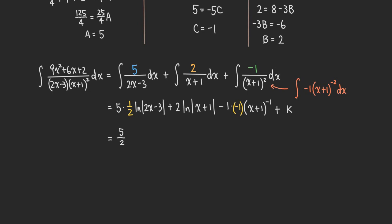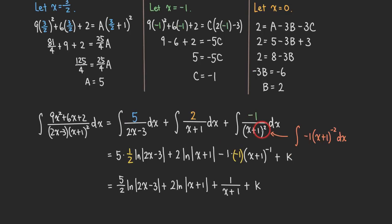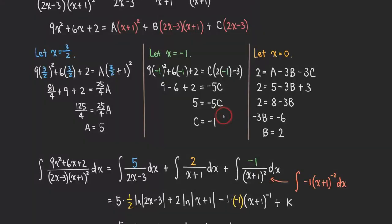Cleaning up, we get the final answer: 5/2 times ln|2x minus 3| plus 2 ln|x plus 1| plus 1 over (x plus 1) plus k. The addition sign comes from negative 1 times negative 1 giving positive. And that finishes the problem — mostly algebra.